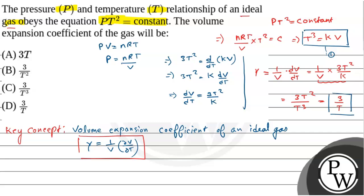The value of the volume expansion coefficient is 3 by T. Hence, our option D is the correct option. Hope you understand it. Best of luck.